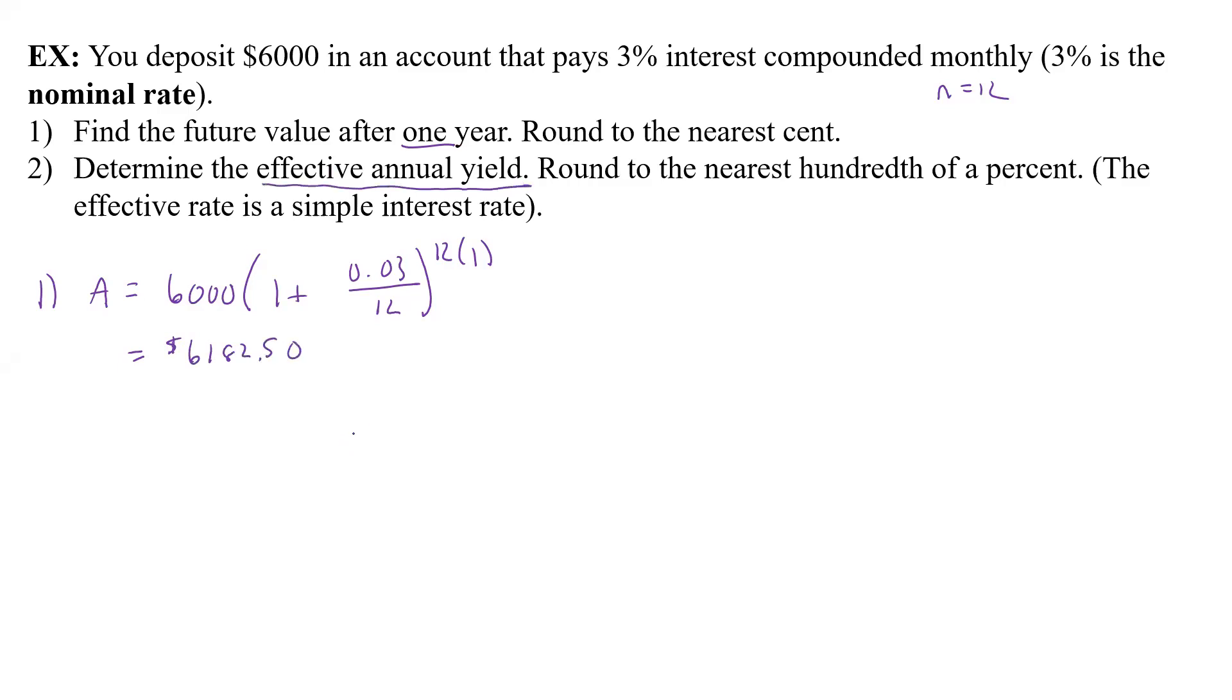Now, the effective annual yield. That's what we do if we had just plain old compound interest, no compounding monthly, yearly, or whatever. It's just going to be compounding interest. How that works is we're going to say, now we know what our future value is, 6182.50 equals. Now our principle, that was 6,000. And remember when we did the really simple one, it's just 1 plus r times t, and in this case t is 1. We're looking for what r is. That's what we're solving for.